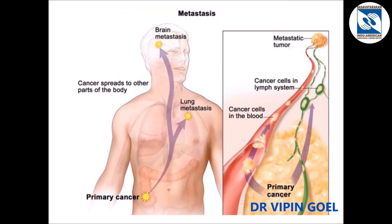Here is an example of metastasis. Cancer started in the large intestine and after some time it entered the blood vessels and spread to other parts of the body like the lung and brain, as shown here.